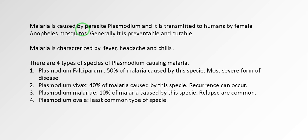Plasmodium is responsible for producing malaria. There are basically four types of species. First, Plasmodium falciparum is responsible for 50% of malaria cases. This type is the most severe form of the disease and it is malignant. Plasmodium vivax is the second type, responsible for 40% of malaria cases, and this is benign.